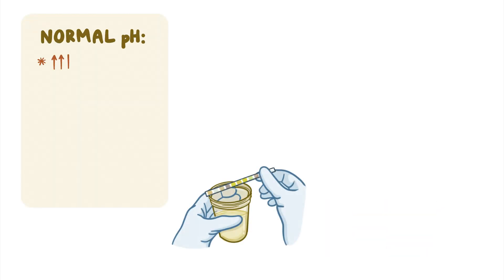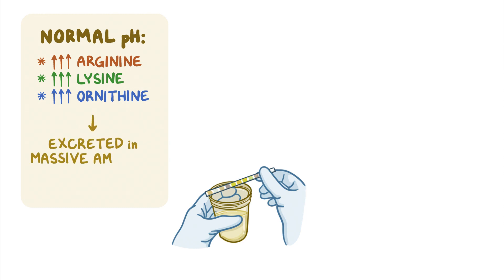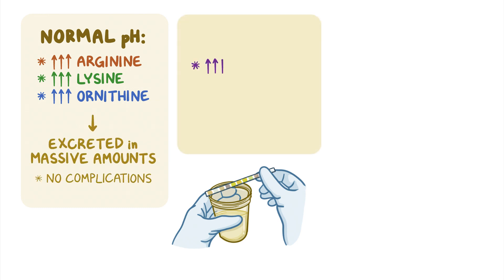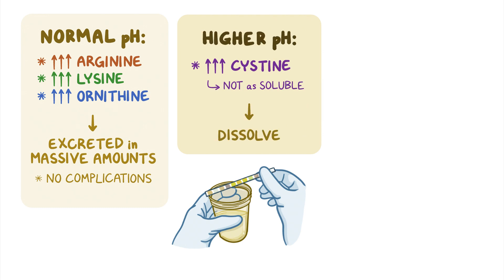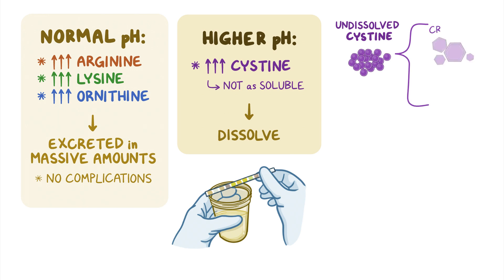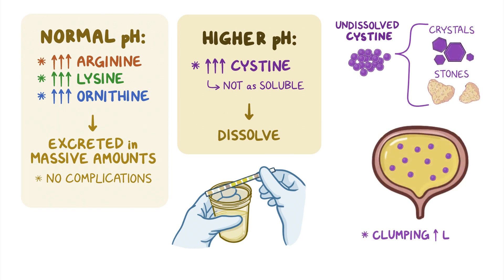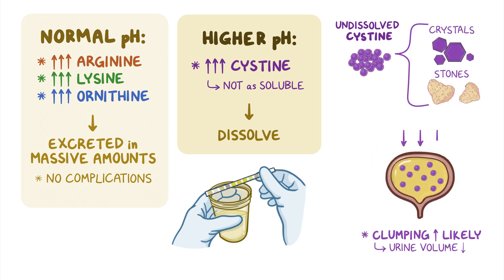With a normal pH of urine, high levels of arginine, lysine, and ornithine can be excreted in massive amounts without additional complications. But high levels of cysteine are not as soluble and need urine with a higher pH to completely dissolve. Undissolved cysteine clumps together to form crystals and stones, and clumping is more likely when urine volume is low as cysteine becomes more concentrated.